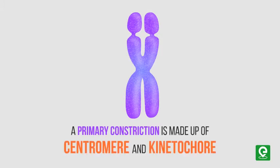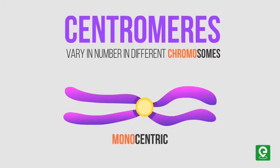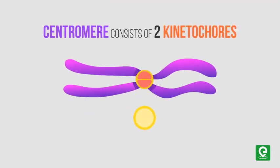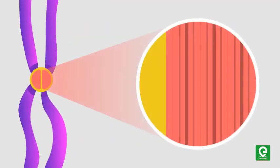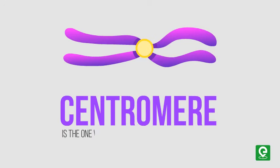The centromeres vary in number in different chromosomes. A chromosome with only one centromere is called monocentric, and a chromosome with many centromeres is called polycentric. A centromere consists of two kinetochores, each made up of protein fibers and microtubules. The centromere is what allows the chromatids to move.